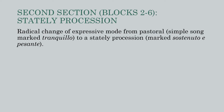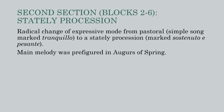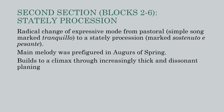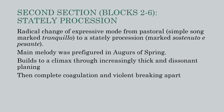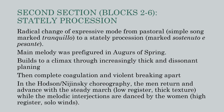In the second section of the scene, there's a radical change of expressive mode from pastoral to religious — from a simple song marked tranquilo to a stately procession marked sostenuto e pisante. The melody was prefigured in augurs and becomes the main melody here. This section builds to a climax through increasingly thick and dissonant planing. In the Hodson-Nijinsky choreography, the men return and advance with a steady march while the melodic interjections are danced by the women. Low register music with a thick texture is for the men; high register melodies, especially played by solo winds, are for the women.